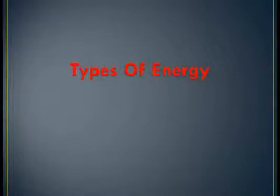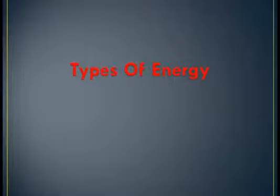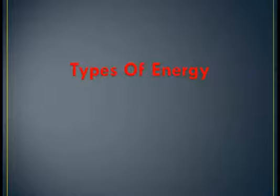The ability of a body to do work is called energy. We already discussed two types of energy: one type is kinetic energy and the second type is potential energy. We discussed these two types in detail and also found their mathematical form. Now we are discussing more types of energy.